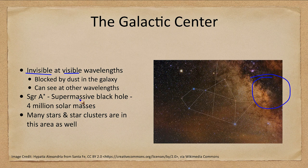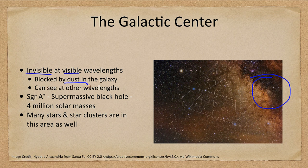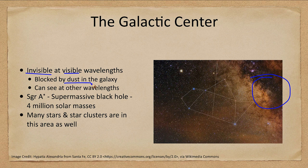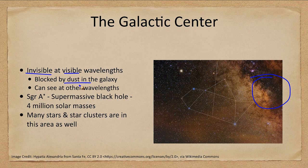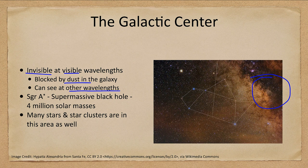Can we see anything there? No. However, if there were no dust there, this would be the brightest object in the sky because of all the light, all the stars, all the energy coming from there. But the dust in our galaxy blocks it. We can see it at other wavelengths—it is the brightest and was the first detected radio source in the sky.